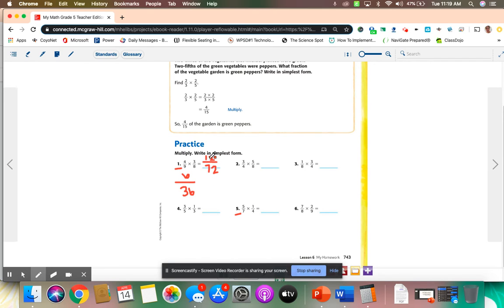Because remember, whatever I do to the top, I need to do to the bottom. All right, so I can keep going. I can also do six and 36. Six, I can divide by two, which would be three. 36, I can also divide by two, which would be 18. Use a calculator if you need to. That's fine.